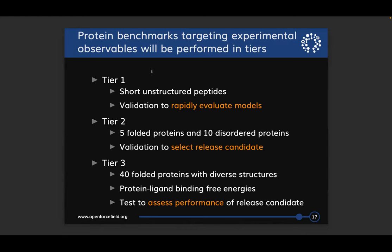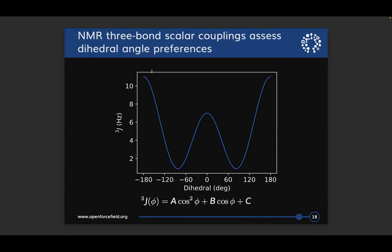Today I'll tell you about just the tier one data and one protein from tier two. I'll show you NMR scalar couplings, which are a way to assess conformational preferences for backbone dihedrals. These are parameterized by a Karplus equation with coefficients A, B, and C fit either to a static experimental structure or to DFT calculations on model compounds. The scalar coupling has high values when the dihedral angle is at 0 or 180 degrees, with a minimum in between that depends on the Karplus parameters.